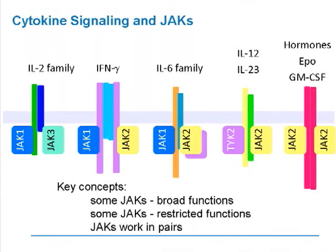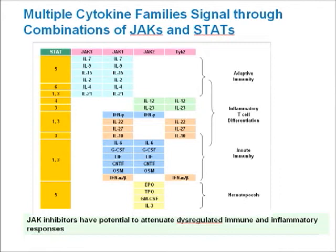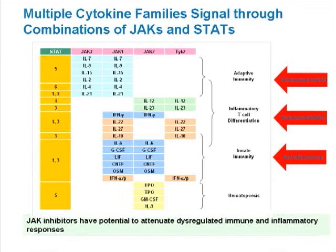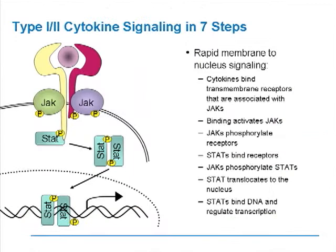Also note that in addition to the broad functions JAKs serve, they work in pairs — so if you inhibit JAK1, you'll affect JAK3, and if you inhibit JAK2, you'll affect JAK1. This is important in designing drugs. Multiple cytokine families signal through combinations of JAKs and STATs, involved in immunosuppression, immunomodulation, and anti-inflammatory activities. So it's a really different concept than inhibiting TNF or IL-6, which are like laser-guided missiles affecting just one part of the integrated immune response. Inhibiting JAK will inhibit multiple cytokines in one broad stroke.